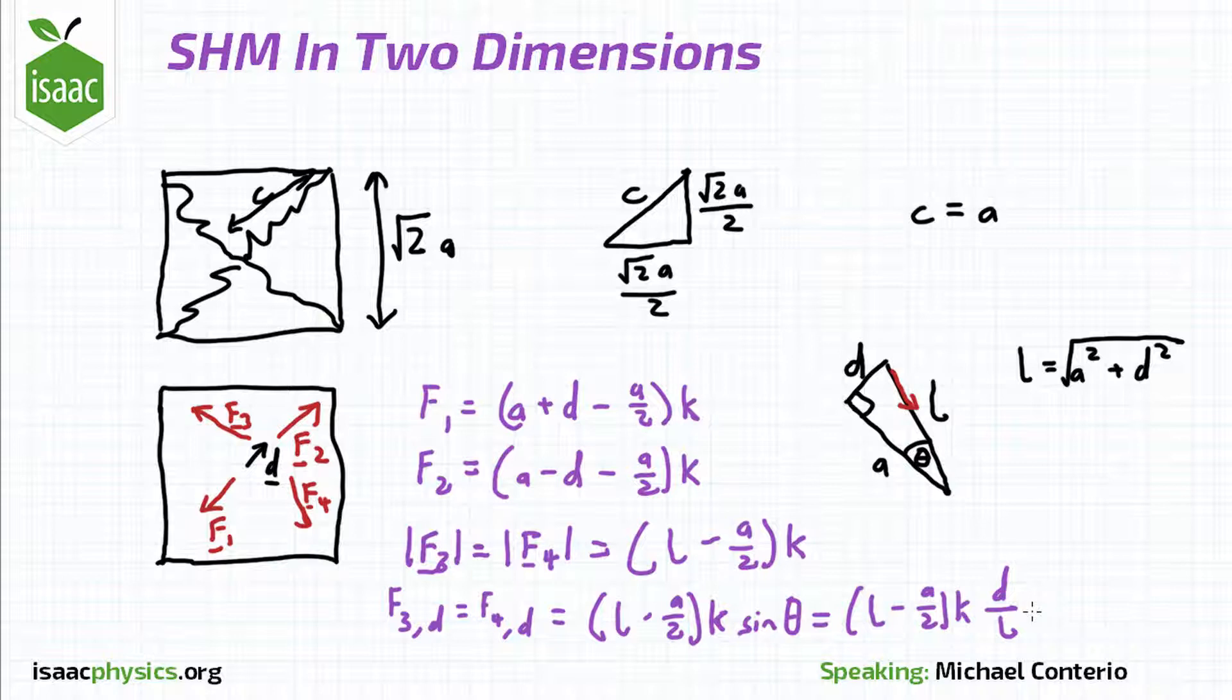Now combine these forces to work out an equation of motion for the mass attached to all four springs and use this to work out the angular frequency of the simple harmonic motion that it undergoes.